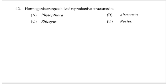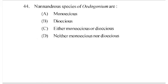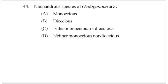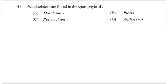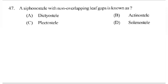Hormogonia are specialized reproductive structures in — answer D part: Nostoc. Paxillus belongs to Basidiomycotina. Androe species of Oedogonium are — answer B part: dioecious. Pseudoelaters are found in the sporophyte of — answer D part: Anthoceros. Androe seeds in Polytrichum mature into — answer B part: biflagellate antherozoids. A siphonostele with non-overlapping leaf gaps is known as — answer D part: solenoidstele.